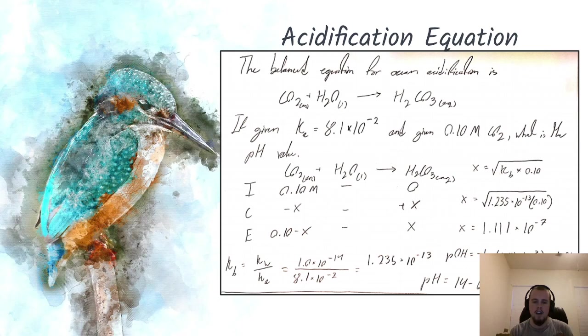The first equation set up will be Kb, which will be Kw over Ka. From here we'll get our Kb value as 1.235 times 10 to the negative 13. The next step is to plug it into our equation to find x, which is x equals the square root of 1.235 times 10 to the negative 13 times the concentration of carbon dioxide. This gives us 1.1111 times 10 to the negative 7 for our x value.